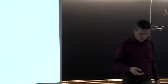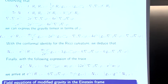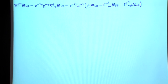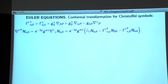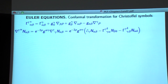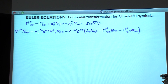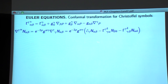Now we continue with the Euler equations, using a similar procedure. I write a general conformal formula for the Christoffel symbols of the DAG metric — equal to the Christoffel symbol of the original metric plus terms involving one derivative of ρ. From that, I compute the divergence of N_αβ with respect to the DAG metric. You can expand it by lowering the index, write the definition of the covariant derivative, and substitute the DAG Christoffel symbols.